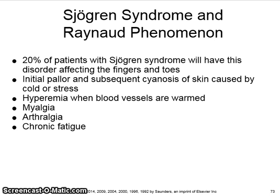When the skin is rewarmed, the blood vessels dilate and the hyperemia results in reddening of the skin. In minutes to hours, the color returns to normal. The Raynaud phenomenon can occur alone or in association with autoimmune diseases other than Sjogren's syndrome. Patients may also have myalgia, which is muscle pain or tenderness, arthralgia, which is joint pain, and chronic fatigue.